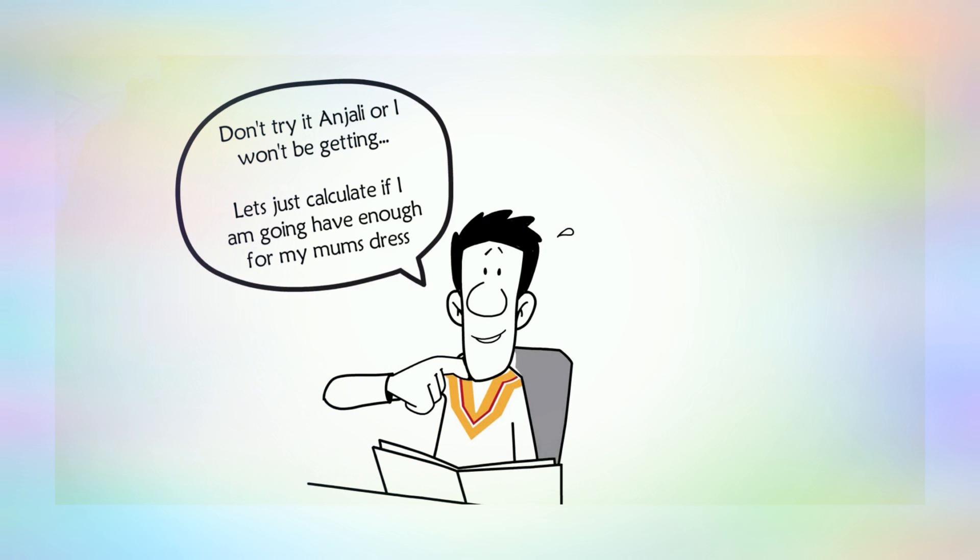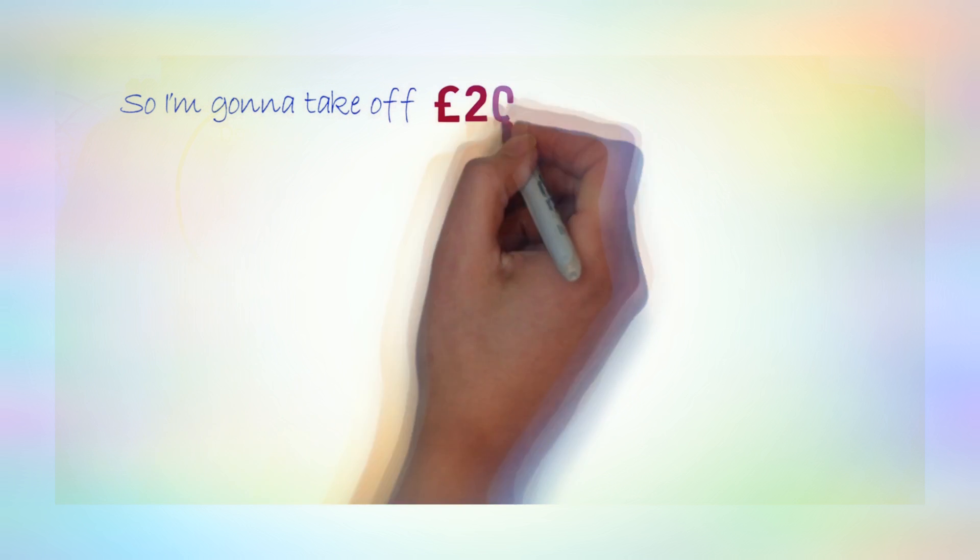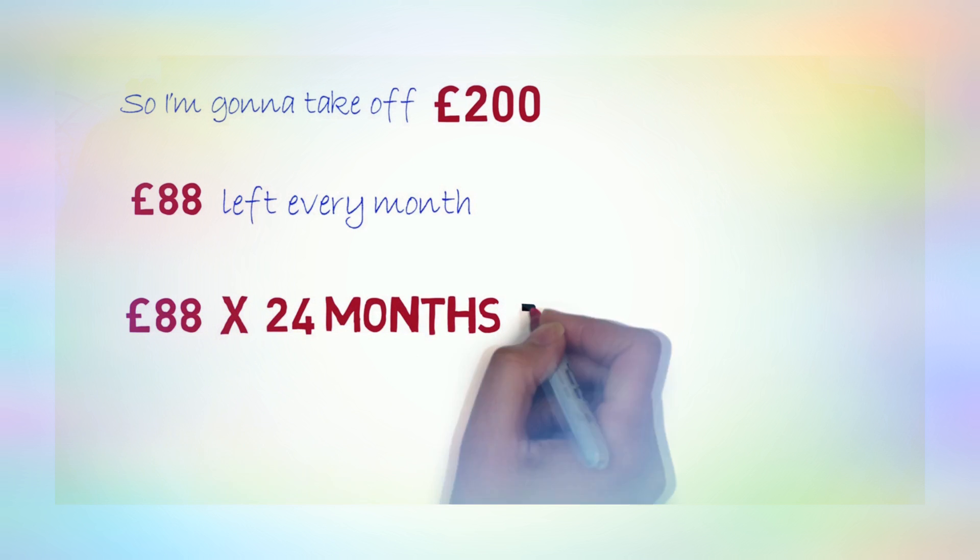Now, don't try Anjali. Let's just calculate if I'm going to have enough money for my mum's dress. So I'm going to take off £200 and I'll only get £88 left every month. If I multiply £88 by 24 months, I will have £2,112 left.